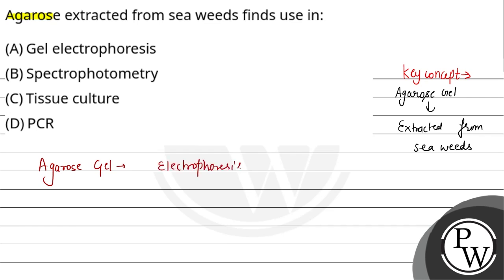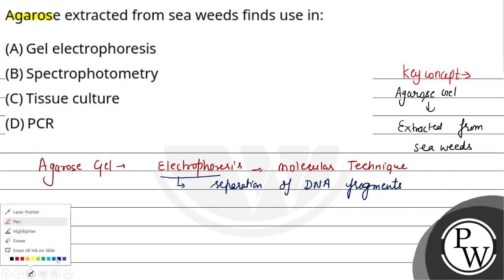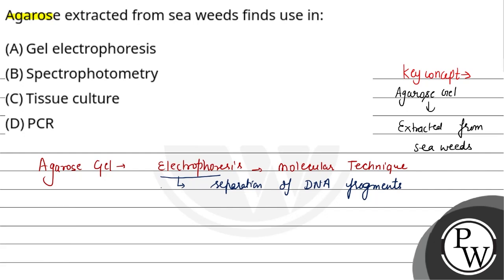Electrophoresis is a molecular technique which is used for the separation of DNA fragments. The smallest fragments will move more and go to the anode because DNA has a negative charge and the anode has a positive charge.